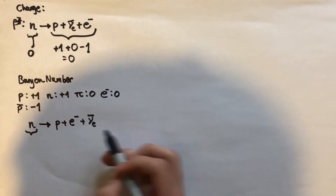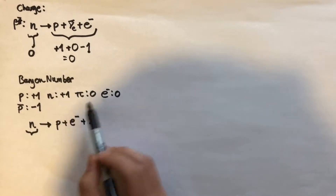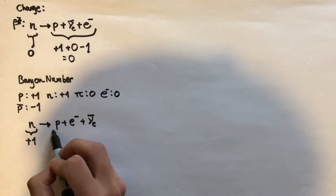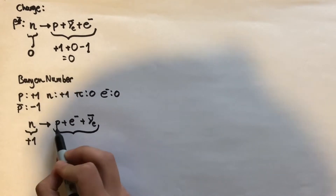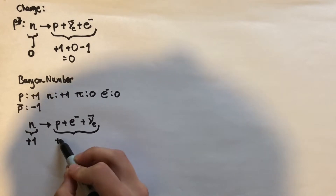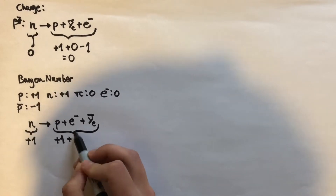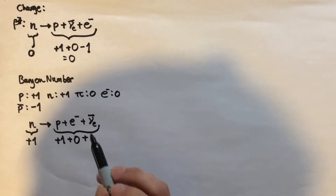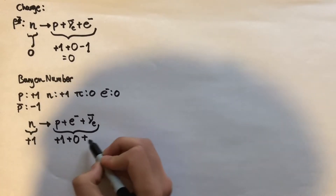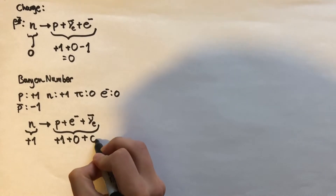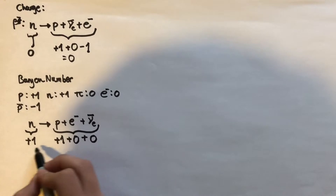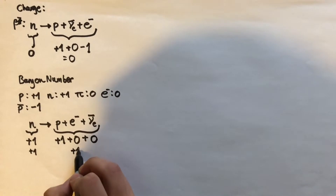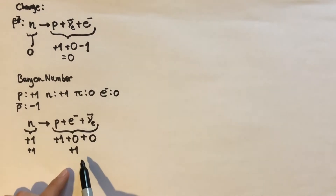Looking at baryon number before and after: on the left-hand side we have the neutron, which is a baryon, so it has a baryon number of plus one. On the right-hand side we have the proton, which is a baryon, the electron which isn't a baryon so it has a baryon number of zero, and the electron anti-neutrino which is a lepton, also zero. Before we have one, after we have one, so baryon number is conserved.